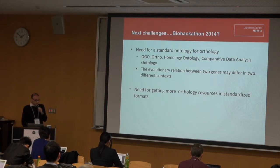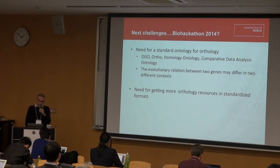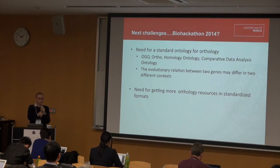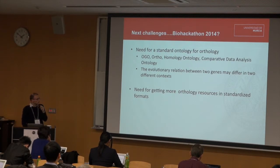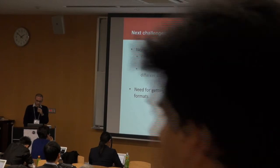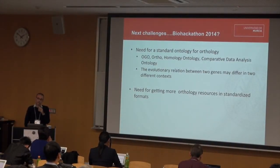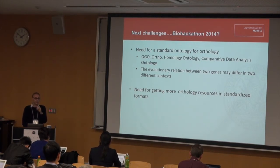What hasn't been precisely represented in the different ontologies or even covered by the different orthology resources is the fact that the evolutionary relation between two genes may differ in two different contexts. In one given context they can be orthologs, and in another context they can be paralogs. This is a source of misinformation in the resources. There is also a need for getting more resources in standard format, because as I showed, there are around 36 different resources and maybe only four or five are using the orthoXML standard format.